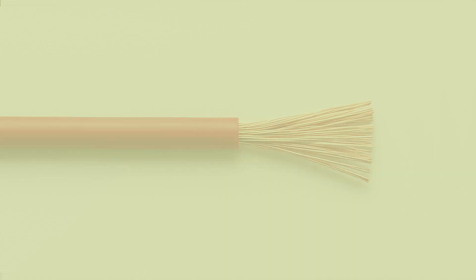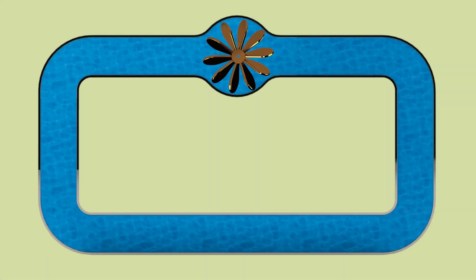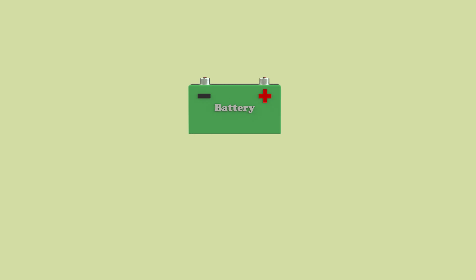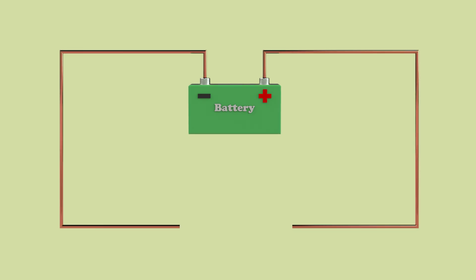So if we turn our water example into an electrical circuit, the pump becomes the battery, which pushes the electrons around the circuit. The pipe becomes the wire, which is the path for electrons. And the blockages in the pipe represent resistance.